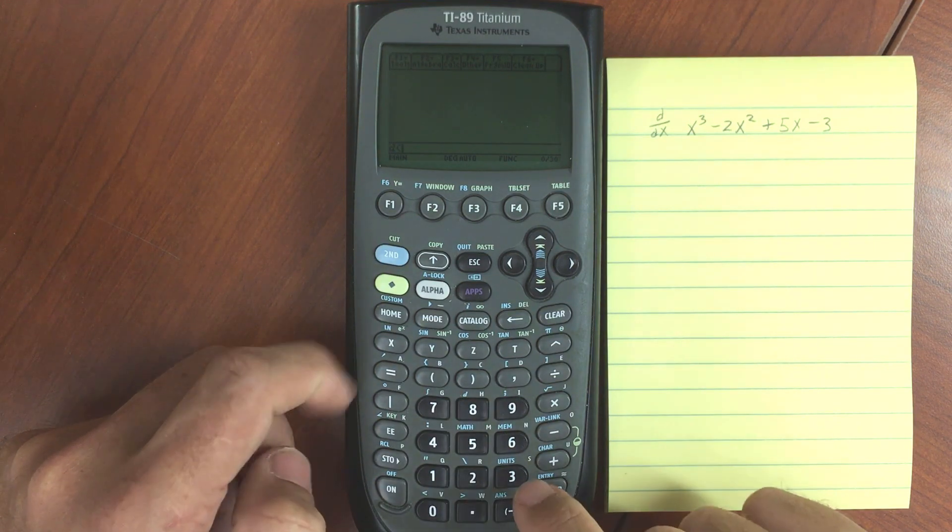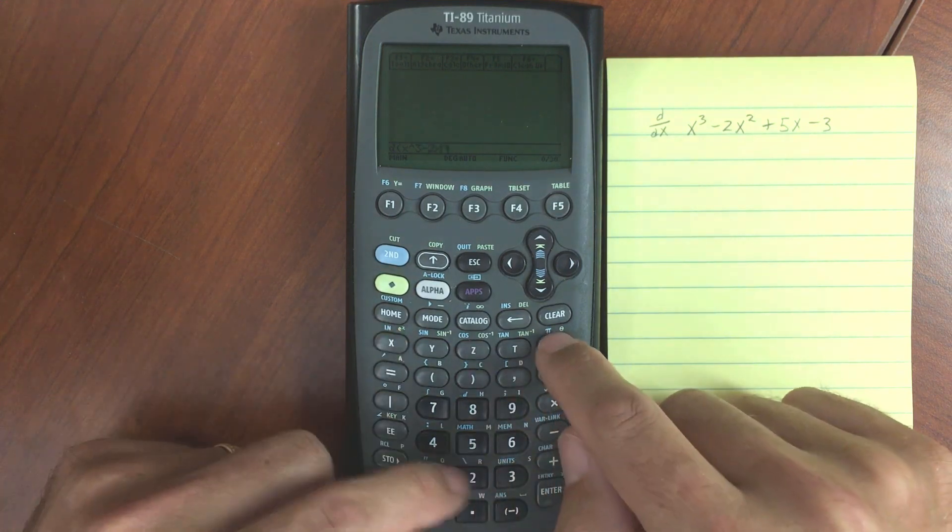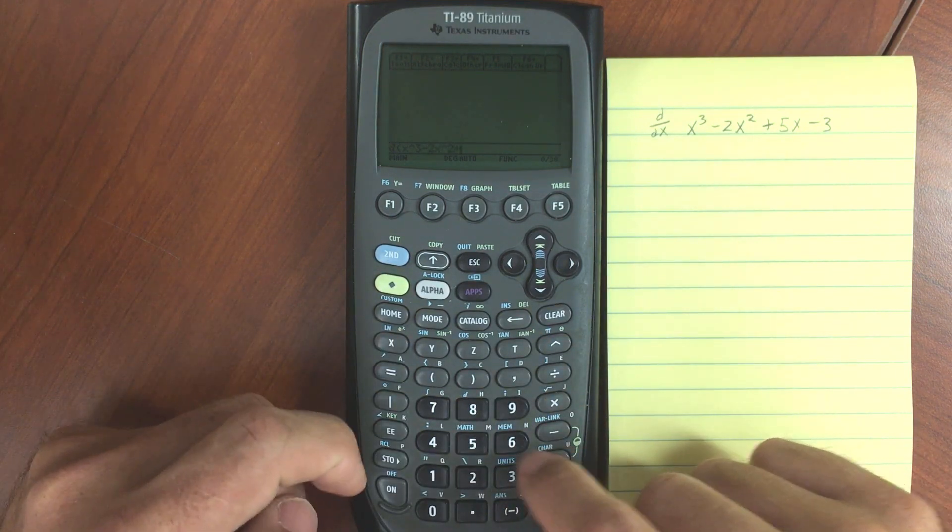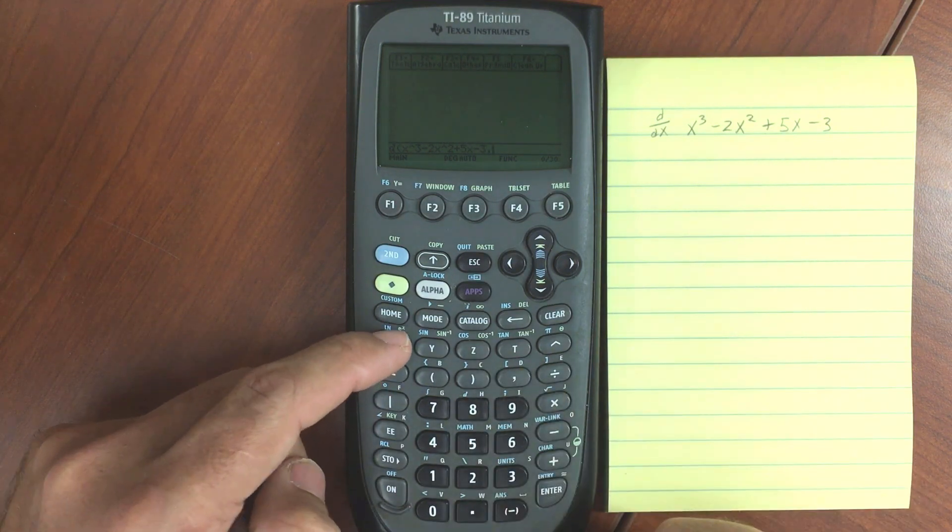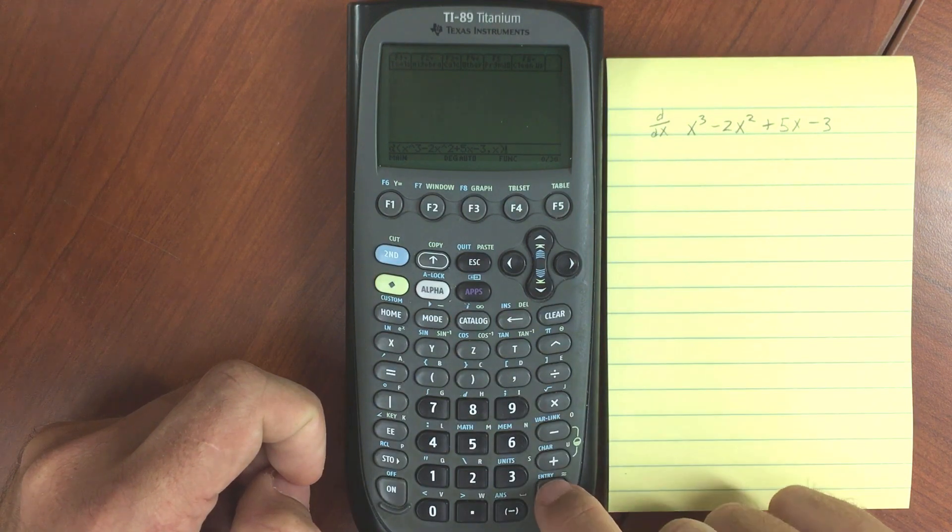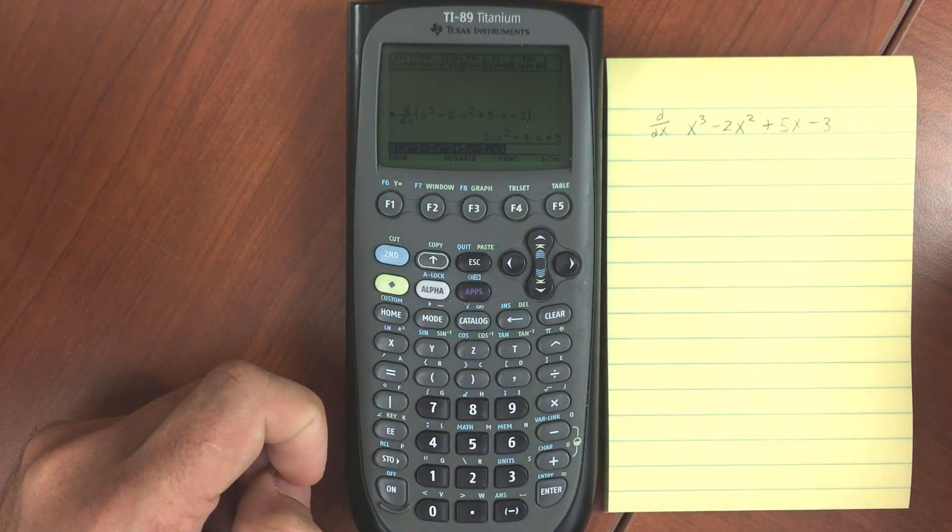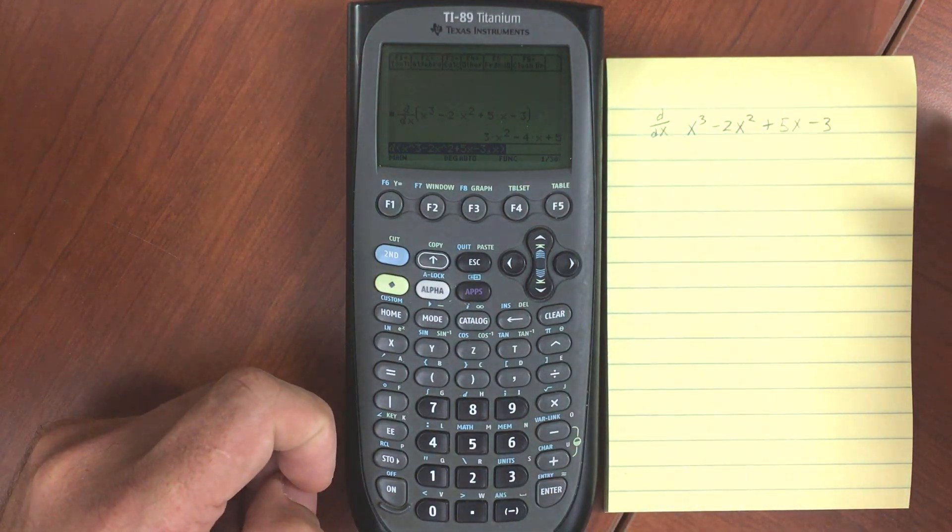So the derivative of x cubed minus 2x squared plus 5x minus 3. And then we are going to differentiate with respect to x, so comma x, close parenthesis, and we'll see what that gives us. So that gives us 3x squared minus 4x plus 5, which is what we would expect.